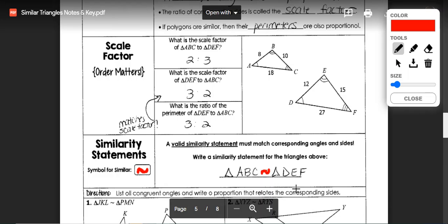Just like with corresponding parts of congruent triangles, we still have to match corresponding angles and sides in order for it to be a valid similarity statement.